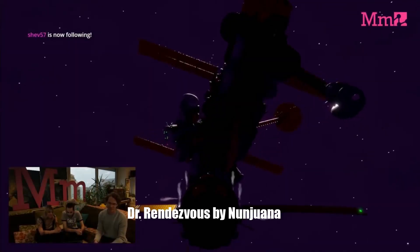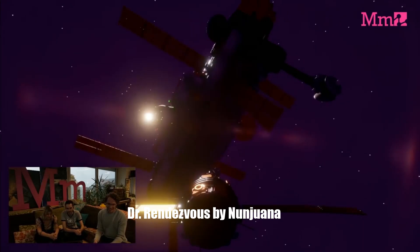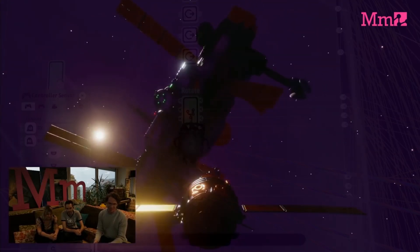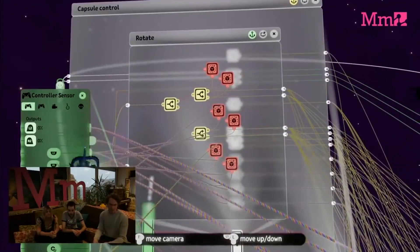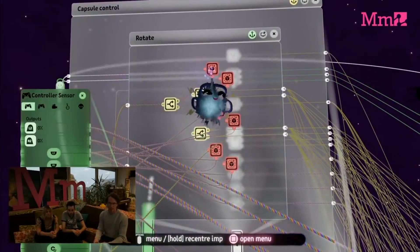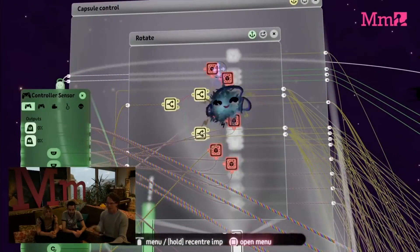A more advanced example would be with Ninjwana from Media Molecule with his Doctor Rendezvous dream. He used the rotators to rotate his spaceship. He turned the dampening all the way down so that there wouldn't be any deceleration and it would feel like space.